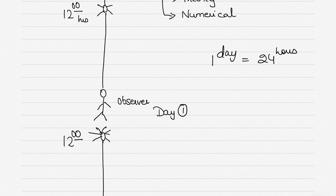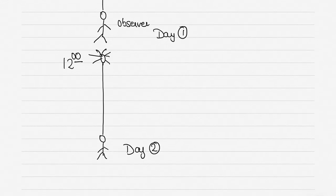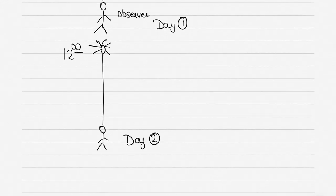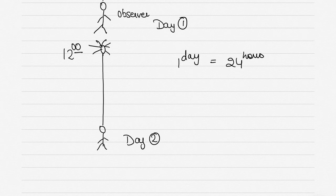Now this is also the basis of timekeeping. Although it is the earth that rotates on its axis, we as observers on the earth are stationary, so we say that it is the sun that is moving with respect to the earth. We say that one day consists of 24 hours based on the movement of the sun.